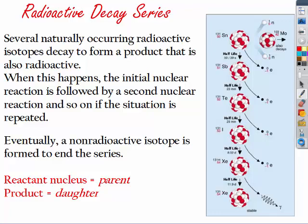So several naturally occurring radioactive isotopes decay to form a product that is also radioactive. When this happens, the initial nuclear reaction is followed by a second nuclear reaction, and so on if the situation is repeated. Eventually, a non-radioactive isotope is formed, and that will end the series.